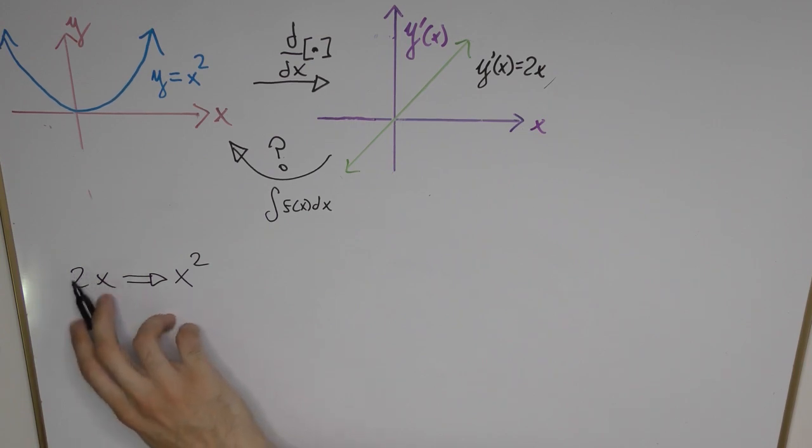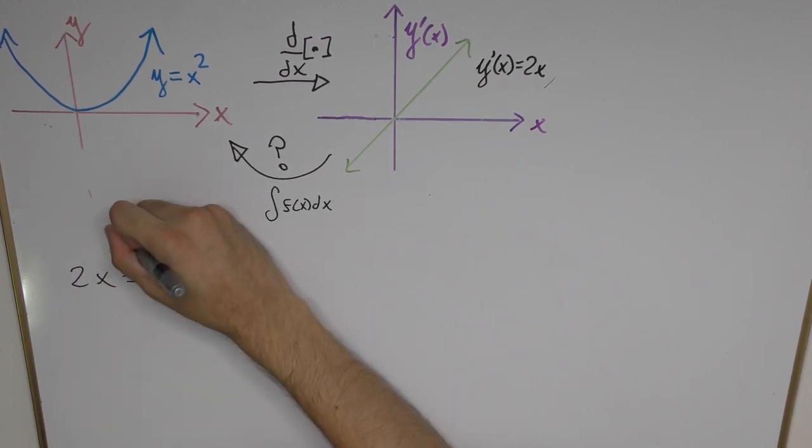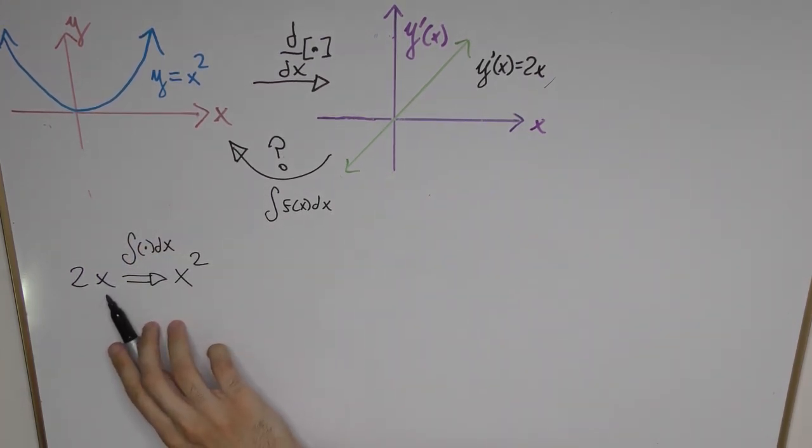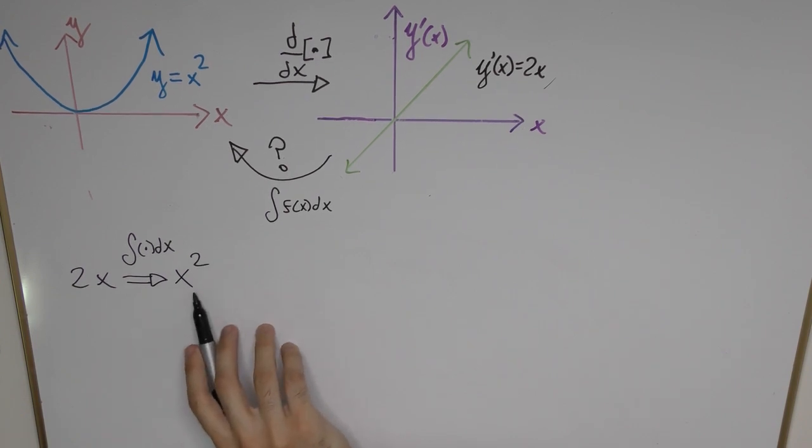So imagine all we have to work with is the function 2x, we would like to know okay what is this the derivative of? So we can apply the integral operator and somehow we need to get this function to have this exact form.